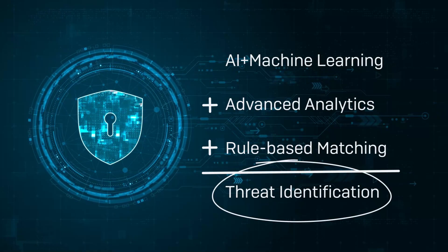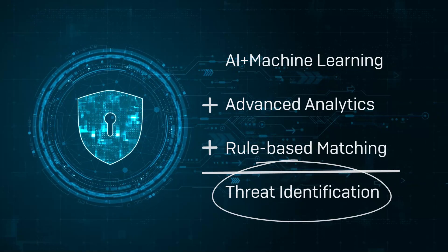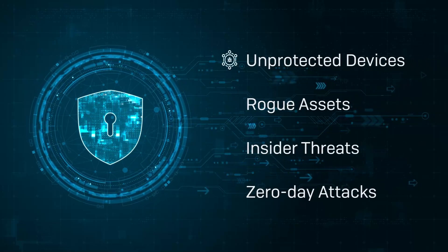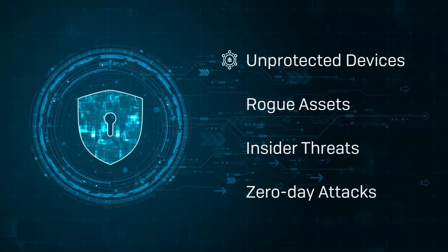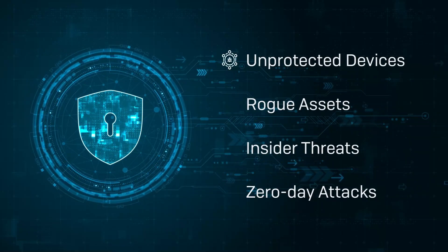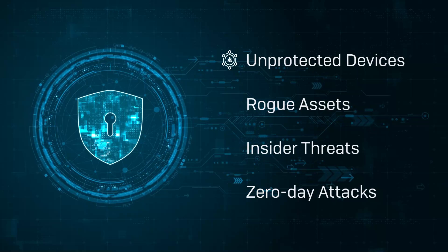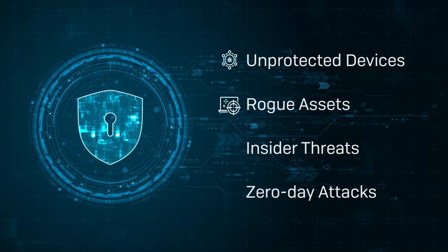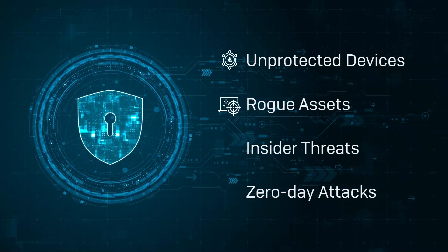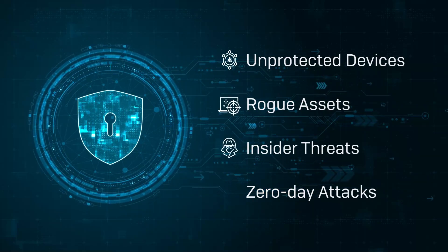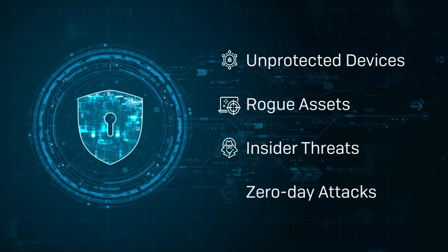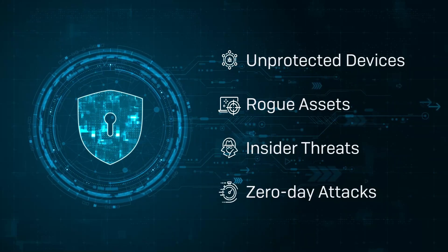it identifies threats that often go undetected until it's too late, including threats on unprotected devices like point-of-sale systems, IoT and OT devices, and legacy operating systems, rogue assets that adversaries exploit to launch attacks, insider threats such as sensitive data uploads to an off-site location, zero-day attacks, and more.